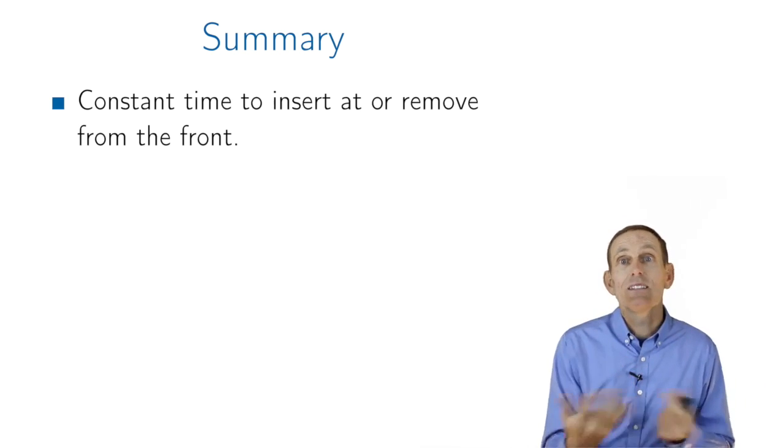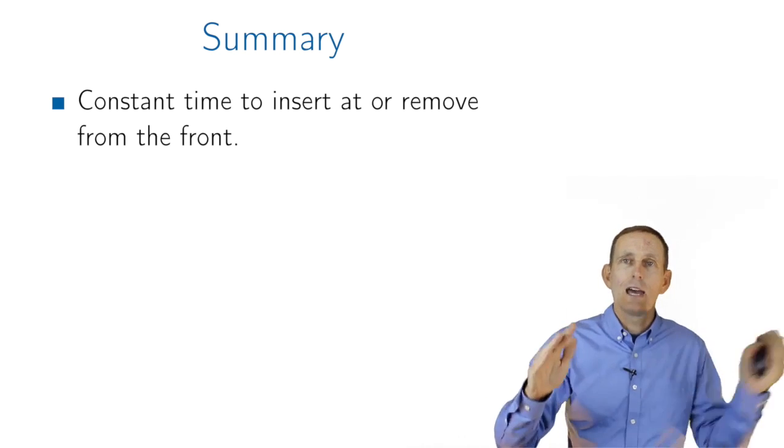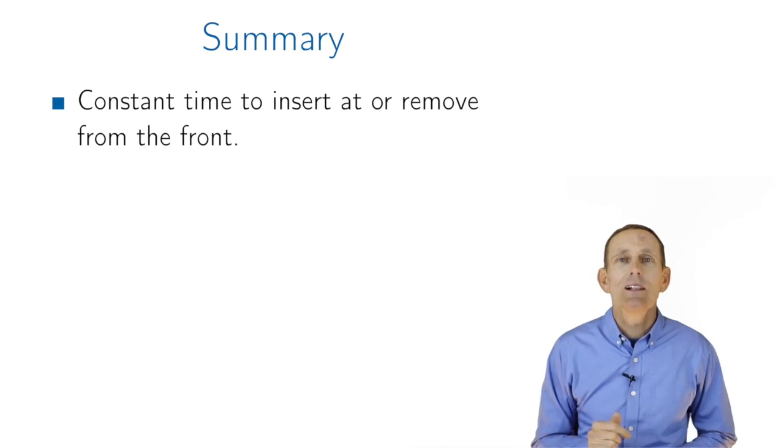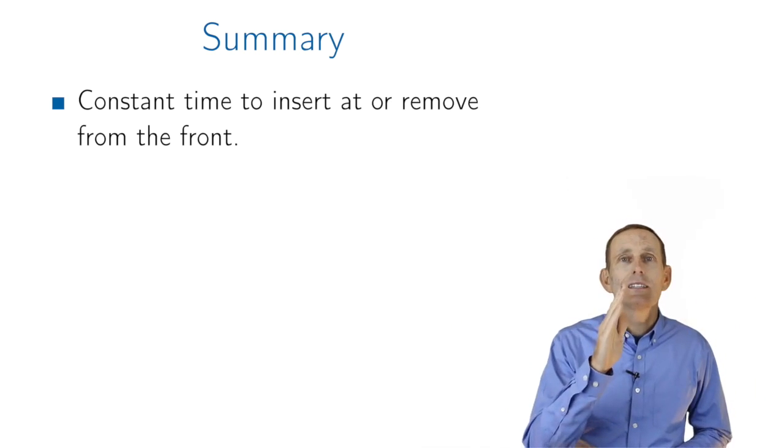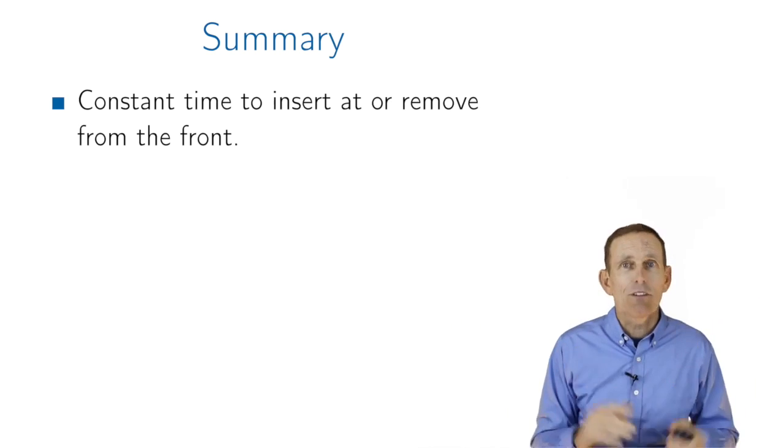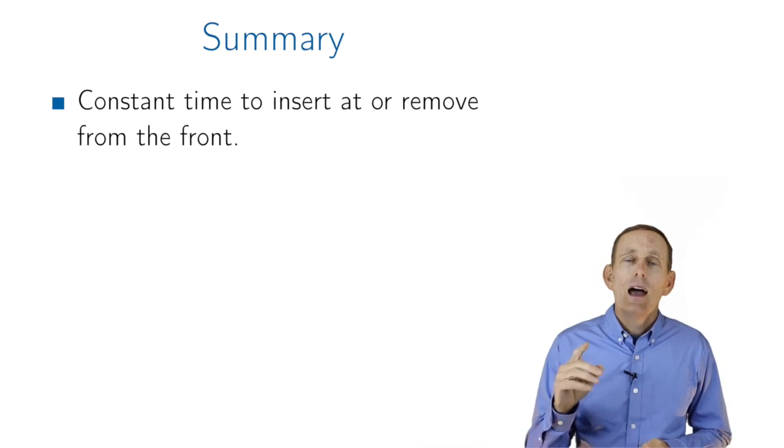Finding the middle element is an expensive operation, because you've got to start either at the head or the tail, and work your way into the middle. So that's an order n operation to get any particular element. Big difference, then, between that and the array.